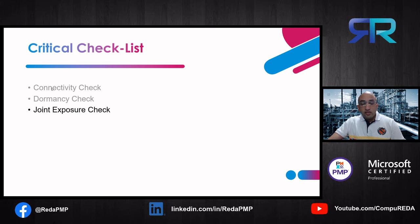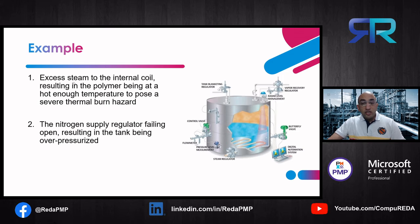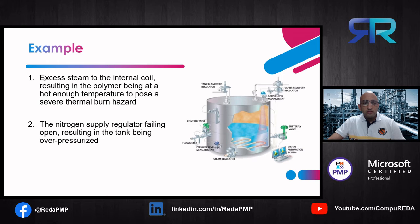Let's apply this on a simple example. Consider an agitated atmospheric tank of polymer kept in molten state by a steam coil. The polymer has a relatively low melting point such as 30°C, and the tank also has a nitrogen blanket for quality purposes. We have two events to evaluate: first, excess steam to the internal coil resulting in the polymer being at a temperature hot enough to pose a severe thermal burn hazard; second, the nitrogen supply regulator failing open resulting in the tank being over-pressurized.